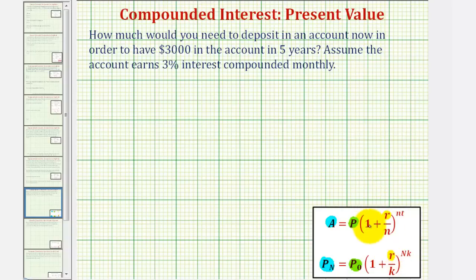In this first formula, N is the number of compounds per year. Notice how N occurs here and here. In our second formula, K is the number of compounds per year which occurs here and here.